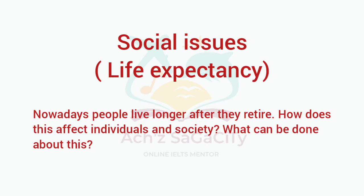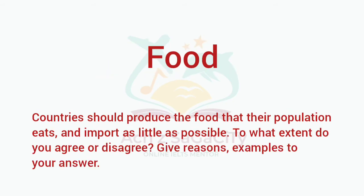Next topic: Social Issues — Life Expectancy. Nowadays people live longer after they retire. How does this affect the individual and society, and what can be done about this? The solution aspect is required. This comes under problem-solution essay type.